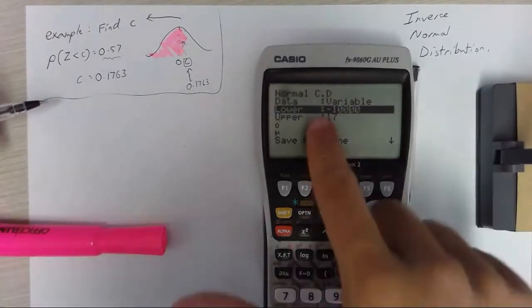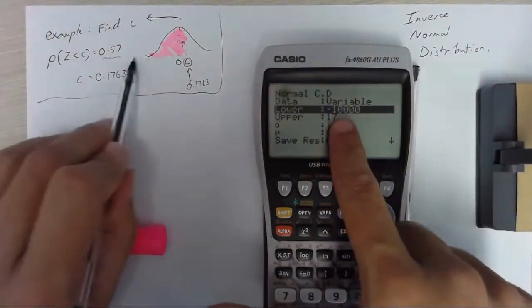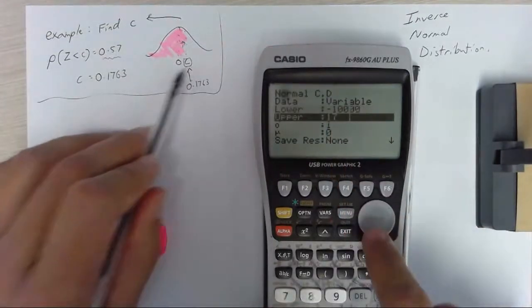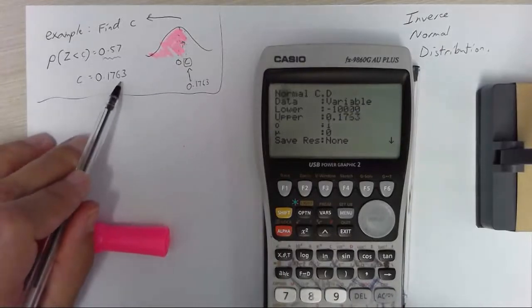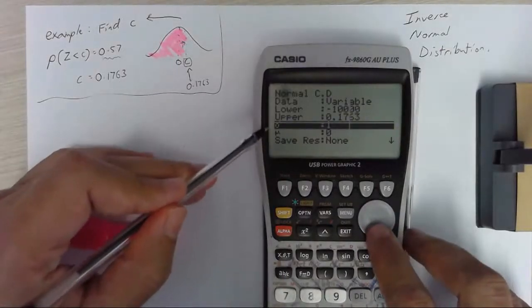So if my lower value was negative 10,000 and if my upper value were 0.1763 and it was a standard normal 1 0, I can draw that.